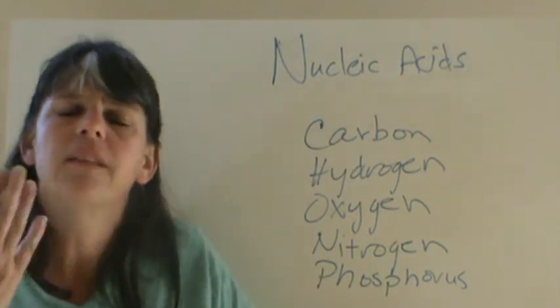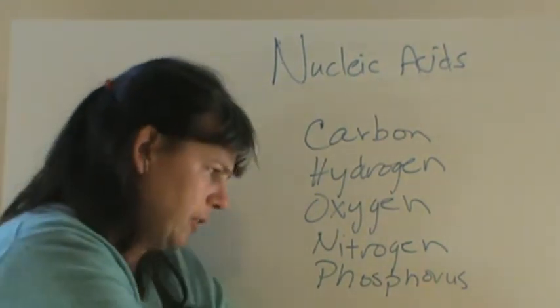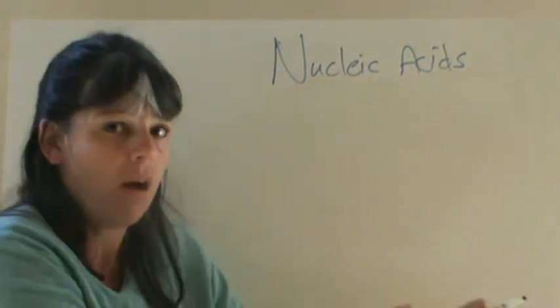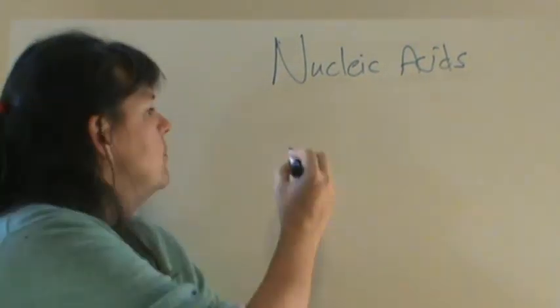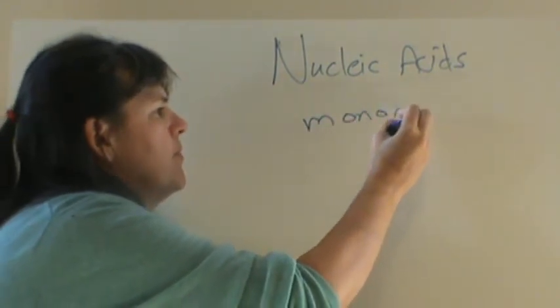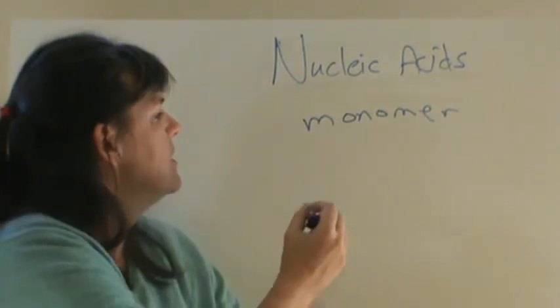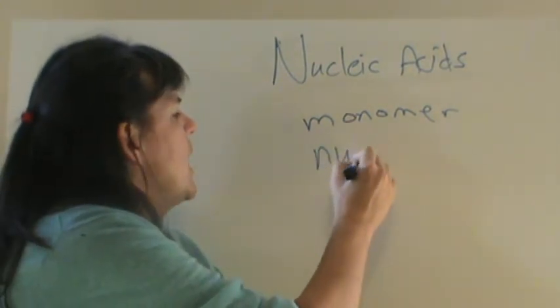So, the last category we're going to look at here is what is the monomer that makes up the polymer of DNA or RNA? The monomer. And our monomer for DNA is nucleotides.